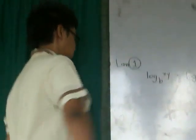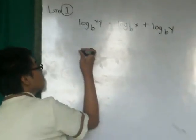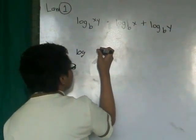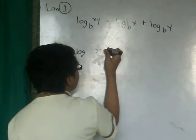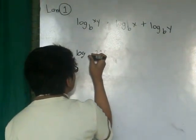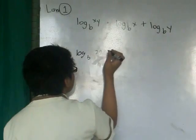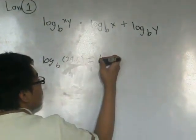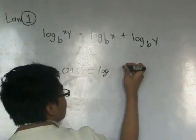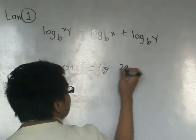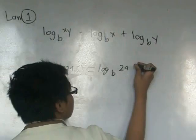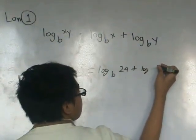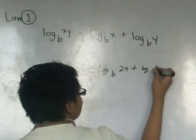For example, log base 4 of 8 times 5 equals log base 4 of 8 plus log base 4 of 5.